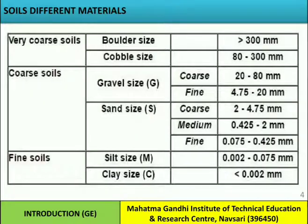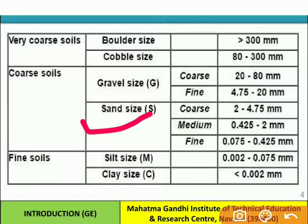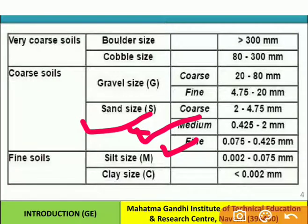Sand size from the coarse soils is subdivided into three parts: coarse, medium, and fine. If it is in the range of 0.075 to 0.425 mm, it is known as fine sand size. If the soil is in the range of 0.425 to 2 mm, it is known as medium sand size, and if it is in the range of 2 to 4.75 mm, it is known as coarse sand size.